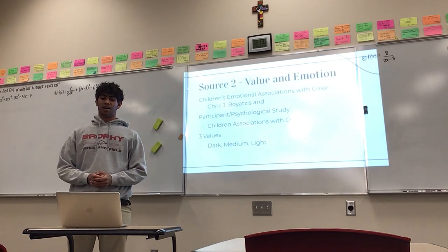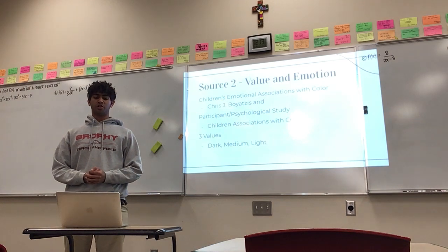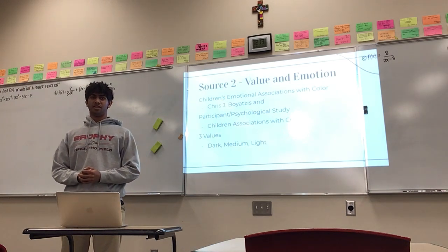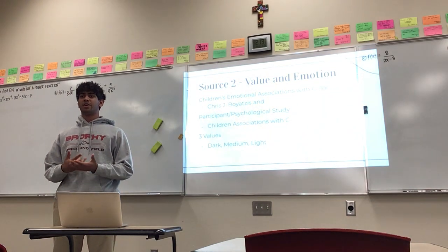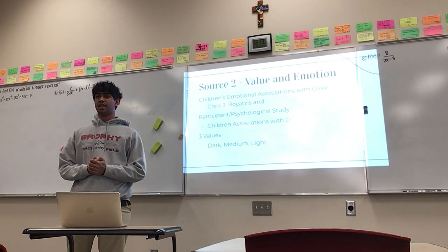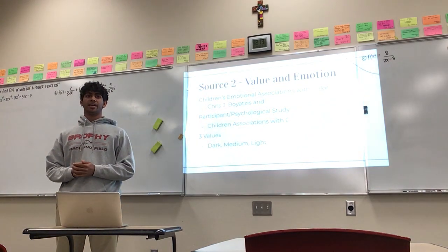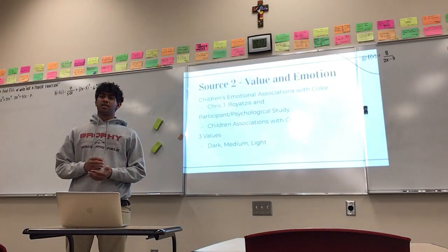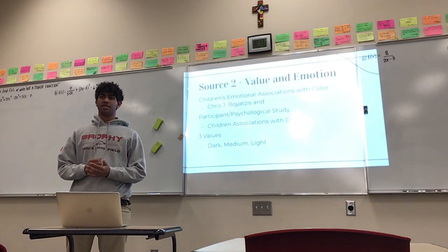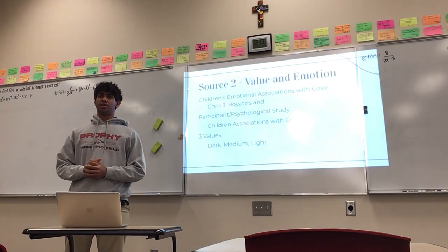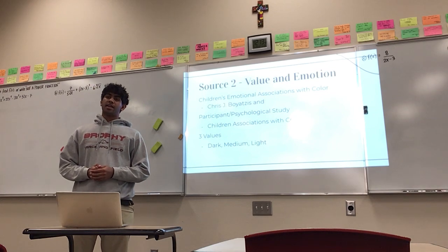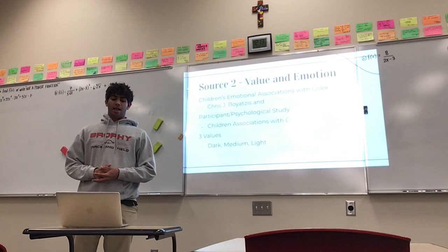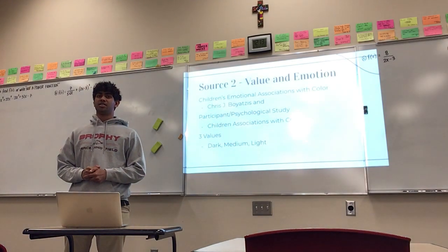For the second source, I looked at value and emotion, specifically within the article 'Children's Emotional Associations with Colors' by Chris J. Boyatiz and Varghese. It was another participant psychological study examining children's emotions with colors, but I focused on the value aspect rather than color. They separated value — how dark or bright something is — into three categories: dark, medium, and light. They found that dark values were associated with the most negative emotions, medium being next, and light with none. Young boys tended to choose dark and medium colors with a higher chance of associating them with positive emotions.